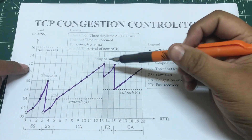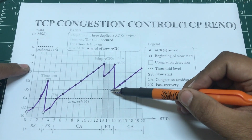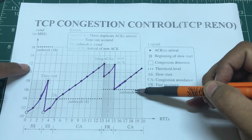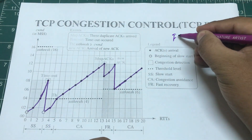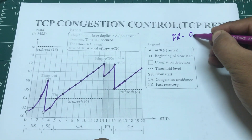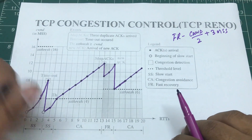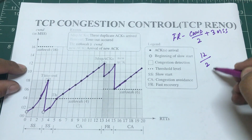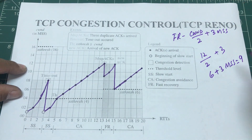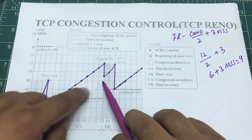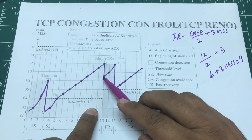In TCP Reno fast recovery: when you receive duplicate ACKs, you take half of your congestion window — in our case twelve, so half is six — and then add three more MSS packets. So the fast recovery starting value is: half of congestion window plus three MSS. Half of twelve is six, plus three MSS equals nine MSS. So fast recovery starts at nine MSS.